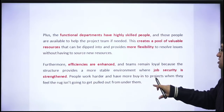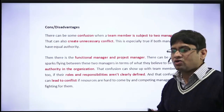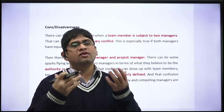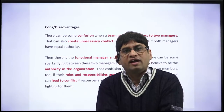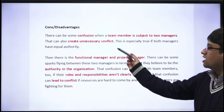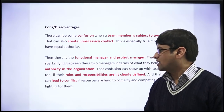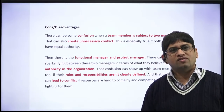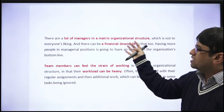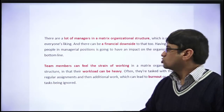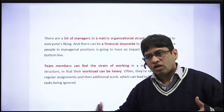Now, the disadvantages of matrix organization: there is confusion because one employee reports to two bosses — two chains of command — so roles are not clearly defined. Conflict arises because interpersonal issues are always present between the functional manager and the project manager, and authority and roles are not clearly defined. Additionally, there is always some financial burden on the organization when setting up a matrix structure.